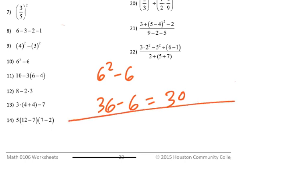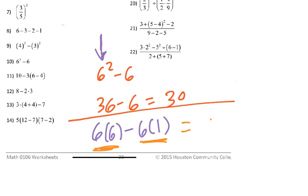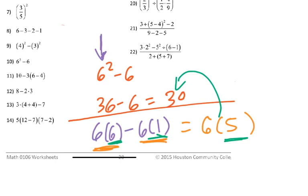Another way to think about number ten: 6 squared is 6 times 6, so you have six 6s, and you're subtracting one 6. That leaves five groups of 6, and 6 times 5 is 30. This kind of thinking builds toward more advanced math — so take note of that.